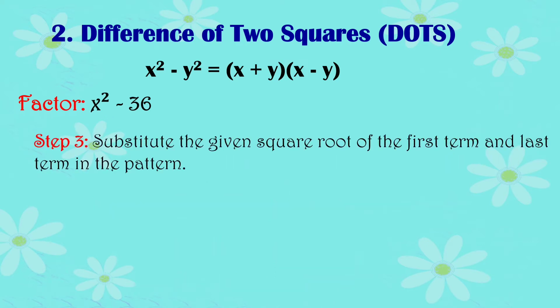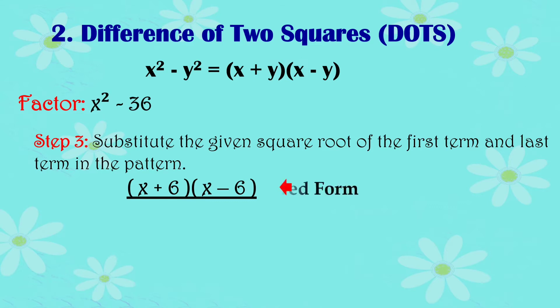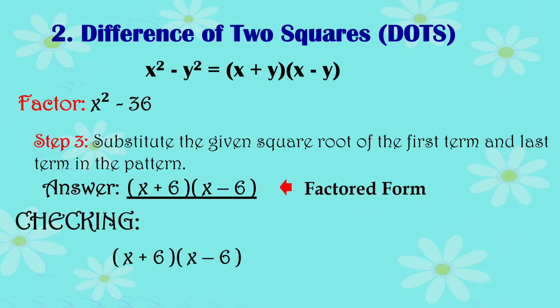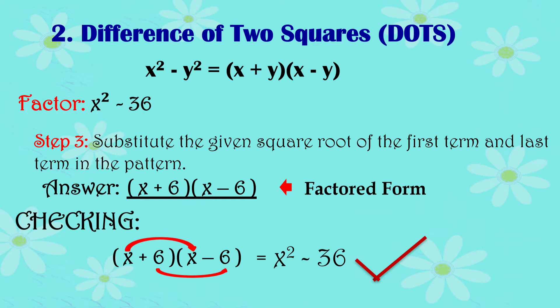Step 3: Substitute the square roots of the first and last terms into the pattern — place the first term in the first position of each binomial and the last term in the last position. So we have the quantity x plus 6 times the quantity x minus 6. Check using the FOIL method or distributive property. For difference of two squares, just take the square root of the first and last terms and express them as a sum and difference of two terms.